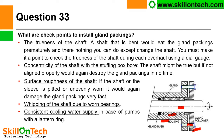Concentricity of the shaft with the stuffing box bore. The shaft might be true but if not aligned properly, would again destroy the gland packing in no time. So the axis of the shaft and axis of the stuffing box housing shall be concentric. Surface roughness of the shaft: if the shaft or the sleeve is pitted or unevenly worn, it would again damage the gland packing very fast. Generally there may be a shaft sleeve over the shaft, and gland packings are provided over the shaft sleeve. If your shaft sleeve is pitted, then it will also damage the gland packings very fast, so the shaft sleeve should be smooth and perfect.